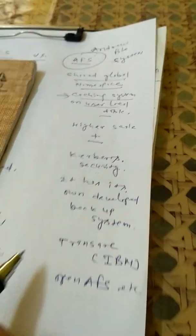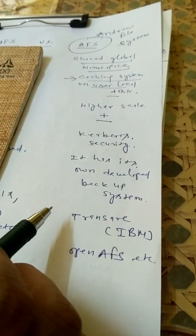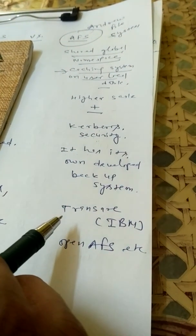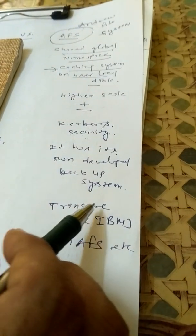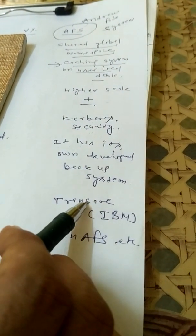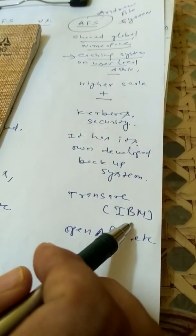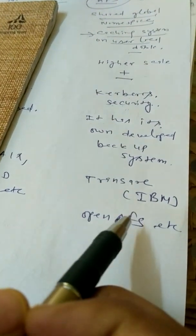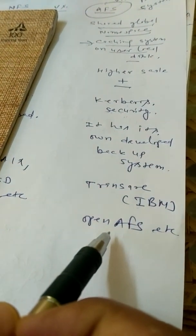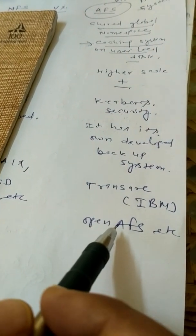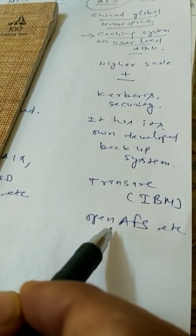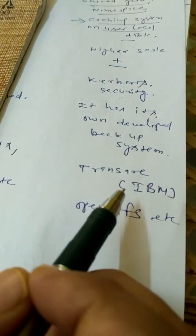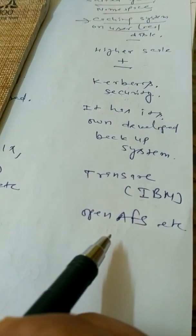Now taking some examples of systems that use the Andrew file system: one is Transshare, which is basically a system of IBM (International Business Machine) that uses the Andrew file system. Another is OpenAFS, which also uses the Andrew file system. So basically these are some of the systems which use the Andrew file system.